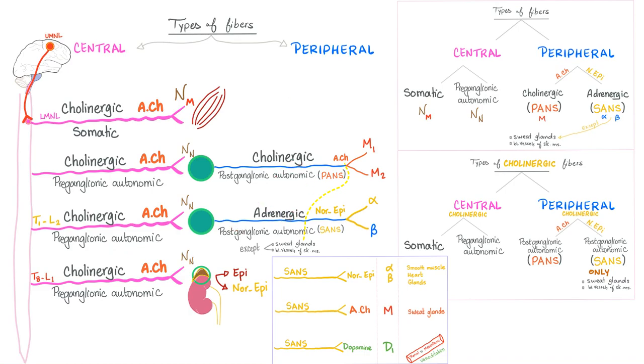If I'm postganglionic, it depends. If I'm parasympathetic, I'll secrete acetylcholine - I'm cholinergic. But if I'm sympathetic, I'll secrete norepinephrine. Therefore, I'm adrenergic, because this is known as noradrenaline.